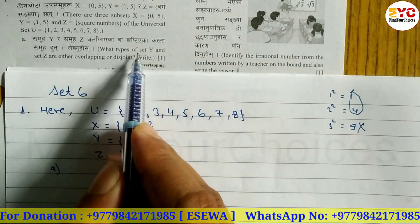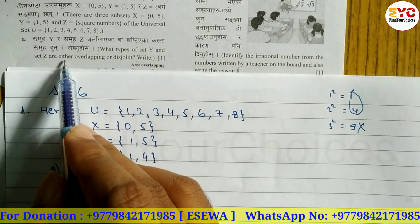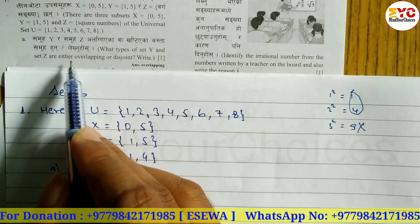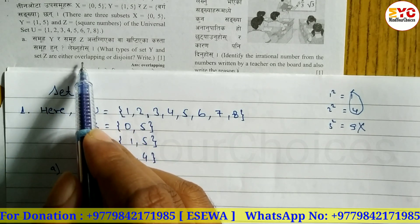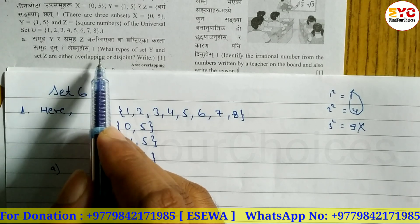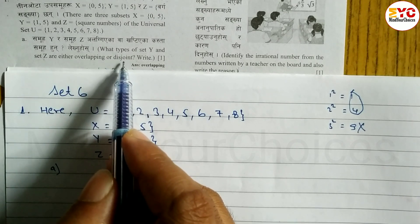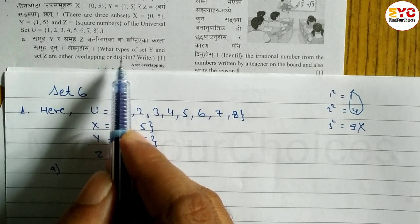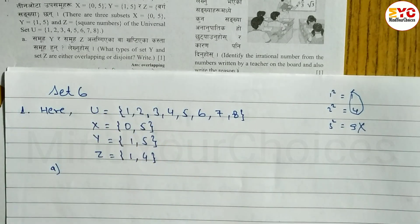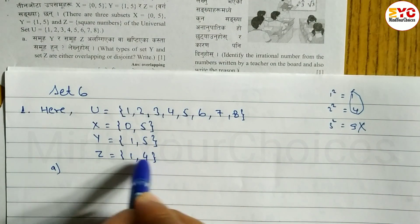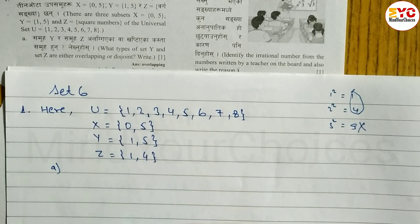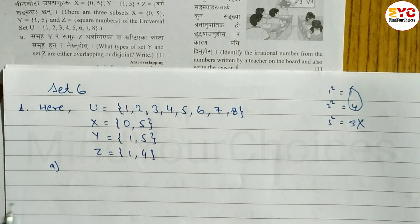What type of sets Y and Z are — either overlapping or disjoint? They have common elements, so Y and Z are overlapping sets.